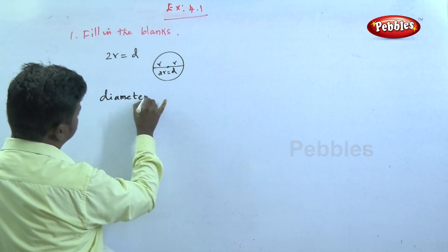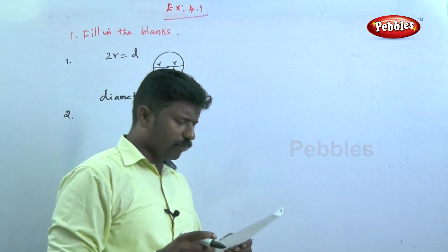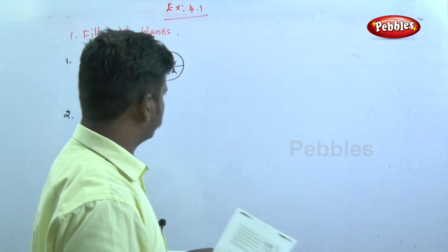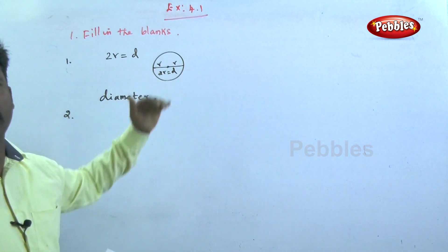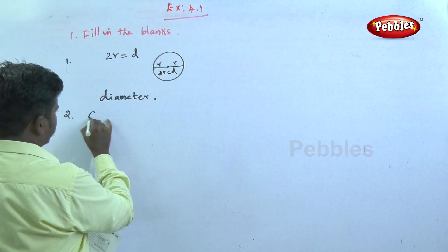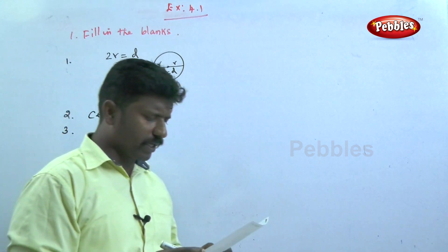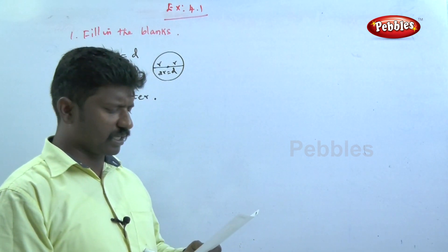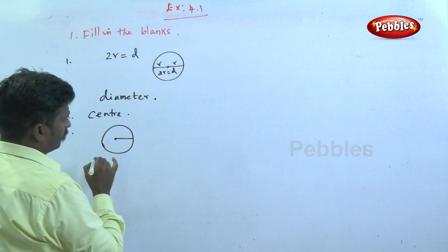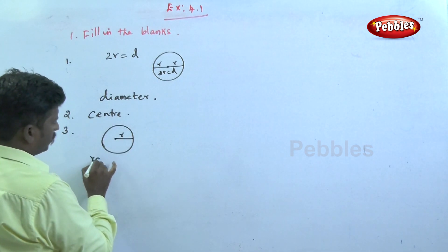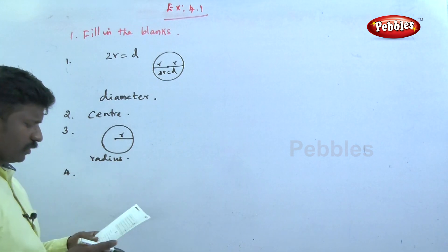The second one: the longest chord passes through the dash of the circle. The longest chord passes through the center area of the circle. So the answer is center. The third one: the distance from the center to any point on the circumference of the circle is called dash. That is called the radius. The answer is radius.